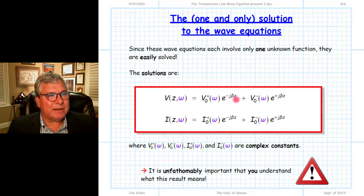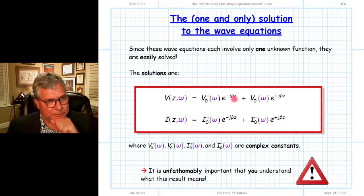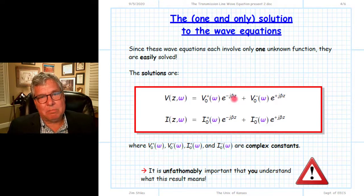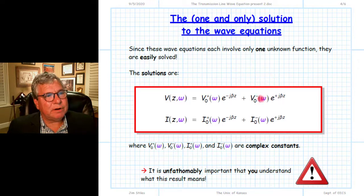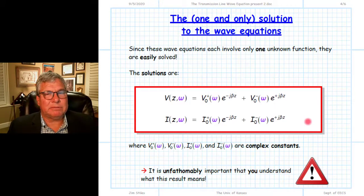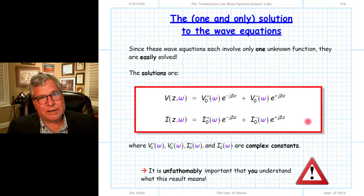Notice also that we have beta here. Remember, beta depends on omega — specifically, beta is omega times the square root of LC. So all of this depends on frequency. We get a solution for a transmission line; if we change the frequency of the sinusoidal oscillation, we're going to get a different solution. It will still have this form, but the value of beta will be different.